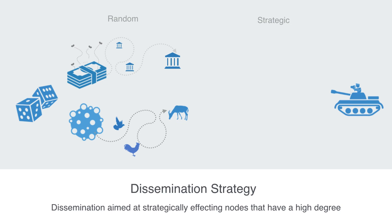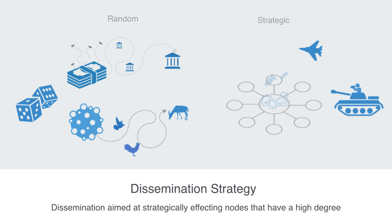But some diffusion processes are strategic. For example, military strategy is often specifically designed to attack a critical node in an opposition's military or infrastructure network, in the hope that this shock to a critical node will then propagate to its dependent nodes and thus have a greater effect than simply choosing to attack any node at random.